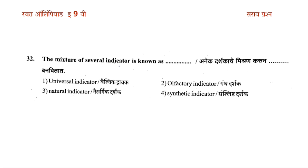The mixture of several indicators is known as what? The options are: option 1 is universal indicator, option 2 is R factor indicator, option 3 is natural indicator, option 4 is synthetic indicator. The answer is option 1: universal indicator (vaisvik darshak).